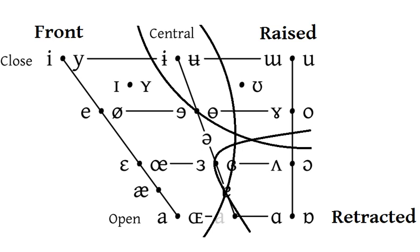Vowel sounds are produced with an open vocal tract. The word vowel comes from the Latin word vocalis, meaning vocal, relating to the voice. In English, the word vowel is commonly used to refer both to vowel sounds and to the written symbols that represent them.